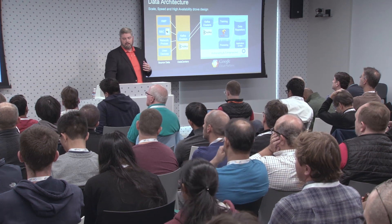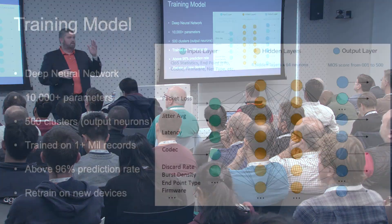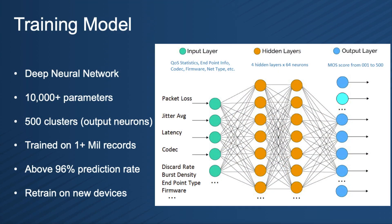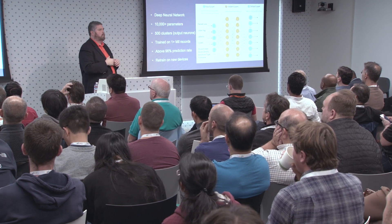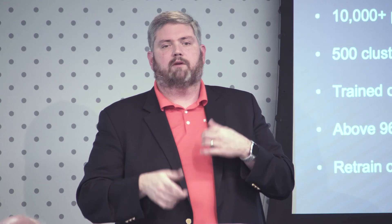After going through the training set, we have a very discrete input layer but the hidden layers are pretty deep. We chose a 500-cluster output because it's simple to go 0 to 500 representing the MOS score range with two decimals. Zero to 99 don't actually exist, so we used that as a checkpoint to make sure nothing showed up in that range. We train with about a million records and can train in minutes, not hours. Accuracy is about 96% or a little above. The main point is quick retraining — as soon as new devices appear in the network putting out different numbers, we can retrain to those devices.